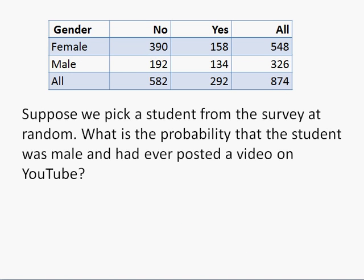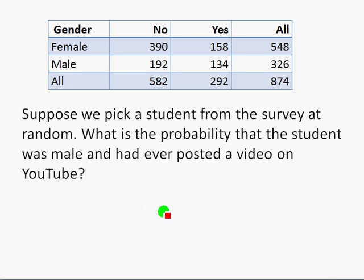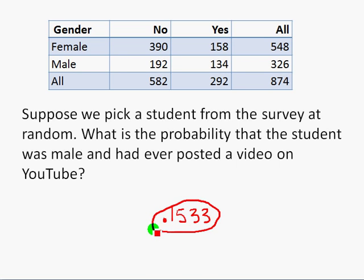Suppose we pick a student at random from the survey. We want to know the probability the student was male and had ever posted a video on YouTube. That's actually the same thing as asking what fraction of the students were male and had posted a video on YouTube — we figured that out just a minute ago. So the probability is .1533.